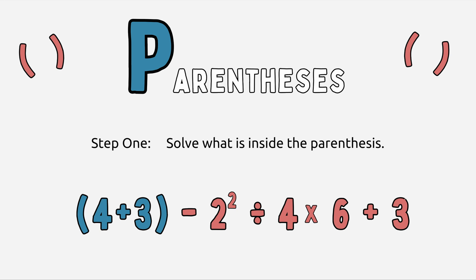So first you're going to solve whatever's in the parentheses. Well, I see that 4 plus 3 is in the parentheses, and 4 plus 3 equals 7, so that's what I'm going to solve first.